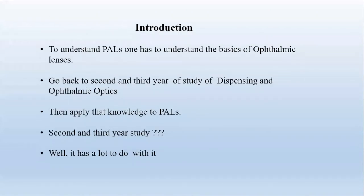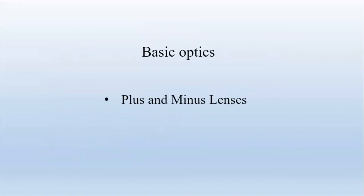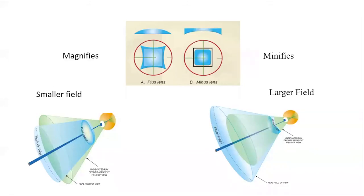If you go back to second and third year study of simple optics and apply that to PALs, it will make your job that much easier. We're going back to basics: plus and minus lenses. Plus lenses magnify and minus lenses minify. With magnification you get a smaller field of view; with minus lenses your field of view is larger. This relates to your field of view through your corridor and also your corridor width.